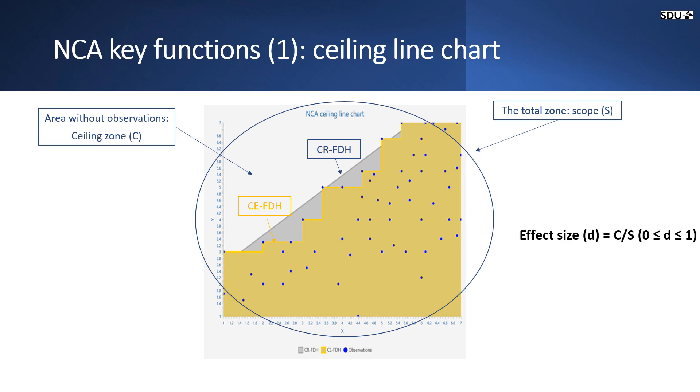The equation for calculating the effect size is D equals ceiling zone divided by scope. The value D should be between 0 and 1. A common threshold is 0.1 and we want the value to be larger than that.